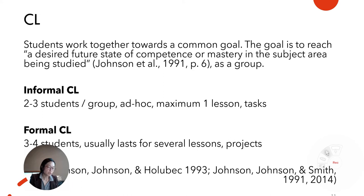Cooperative learning is when students work together towards a common goal. The goal is to reach a desired future state of confidence or mastery in the subject area being studied as a group. Cooperative learning proposed by Johnson, Johnson & Holubec 1993, or Johnson & Smith 1991 and 2014, has three types: informal, formal, and cooperative base groups. In this study, I looked at informal and formal cooperative learning. Informal cooperative learning concerns two to three students per group; these groups are made ad hoc and last for a maximum of one lesson. Formal cooperative learning is composed of three to four students per group and usually lasts for several lessons. Project work is often conducted in formal cooperative learning.